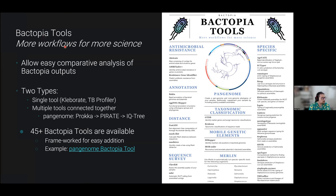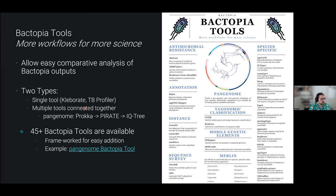Bactopia tools are essentially more workflows for more science. By looking at the standard directory structure, you can run a Bactopia tool — which can include a single tool like Cleverate or TB Profiler — and it'll find the files it needs and run everything for you. You can also connect multiple modules together for something like a pan genome analysis, running Roary and creating a core genome phylogeny. There are currently more than 45 different Bactopia tools, and because of DSL-2, this has been made into a streamlined, framework-driven process.